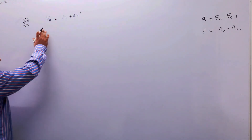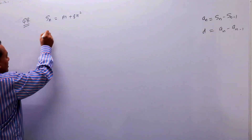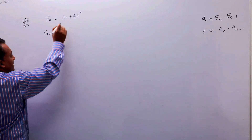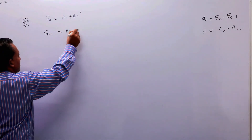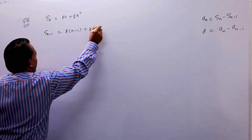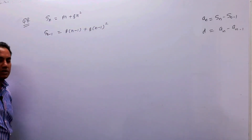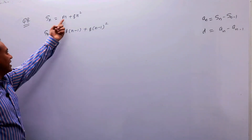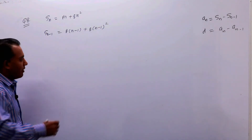अब हम S(n-1) निकाल लेते हैं। वो कैसे मिलेगा — n को replace कर दीजिए n minus 1 से। तो S(n-1) = P(n-1) + Q(n-1)², यानी n की जगह (n-1) रख दिया।